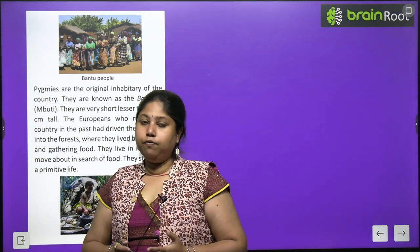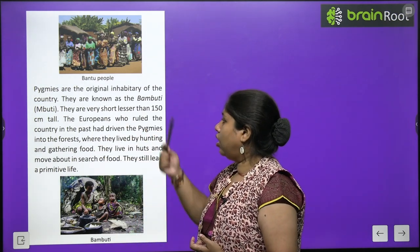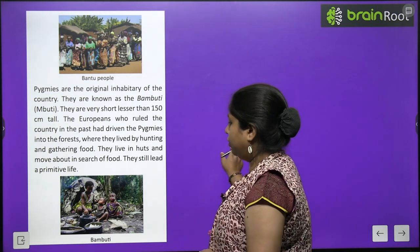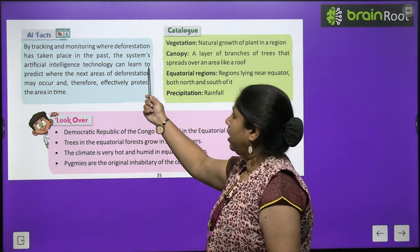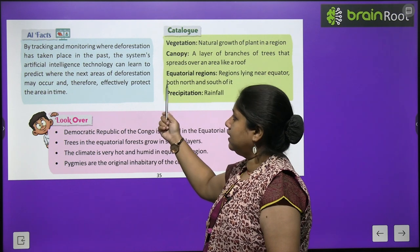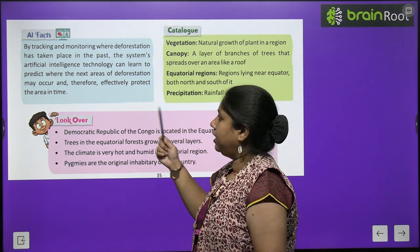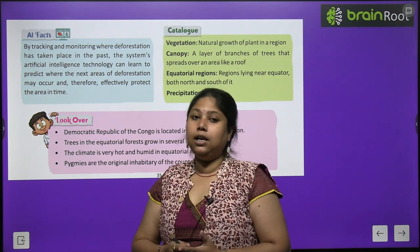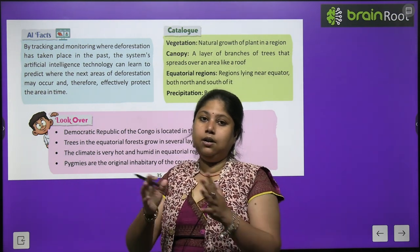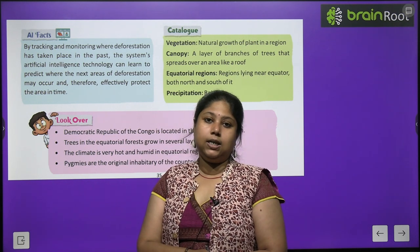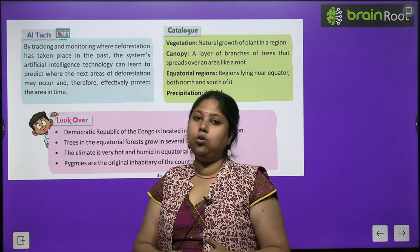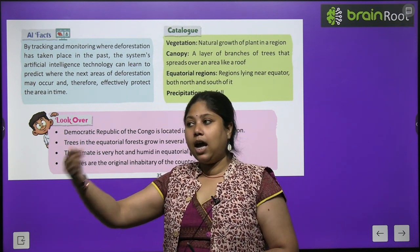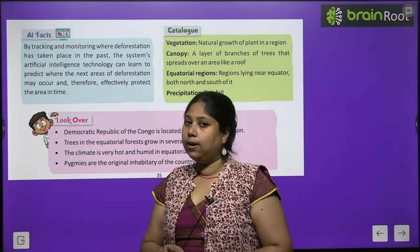We have studied about the different kinds of people — we came across the Bantu people and also the pygmies, whom we also call Mbuti. Now, an interesting fact: by tracking and monitoring where deforestation has taken place in the past, artificial intelligence technology can learn to predict where the next areas of deforestation will occur. With the help of AI, we can study a country's forest areas and predict where deforestation may happen in the future.